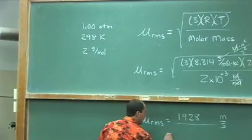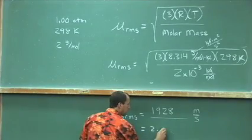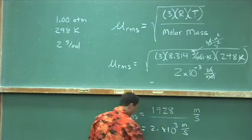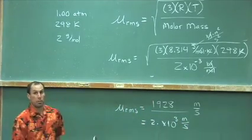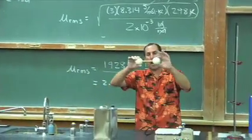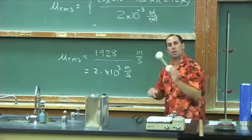Let me just call this two point. No, I can't even call it two point. I'll just call it two point without any zeros, times 10 to the third meters per second or 2,000 meters per second. So these molecules inside the room made out of hydrogen right here in room temperature, 2,000 meters per second.